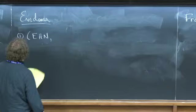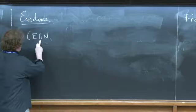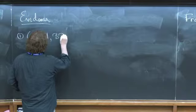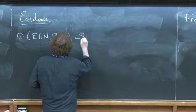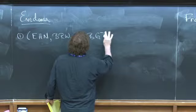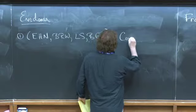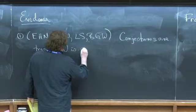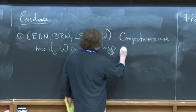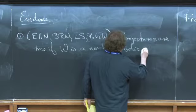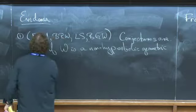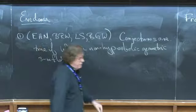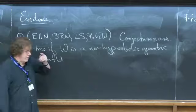So first of all, it follows from the work of a bunch of people, and I hope I'm not forgetting anybody, but so this is Eisenbud-Neumann. I've already mentioned the paper with Dale Rolfsen and Edward Wiest, Lisca-Stipsicz, and then the paper with Gordon and Watson, that the conjectures are true if W is a non-hyperbolic geometric three-manifold. Roughly, well not roughly, exactly speaking, what this means is the two conjectures can be verified to hold for all manifolds which are either Seifert-fibered or admit a Sol geometry.